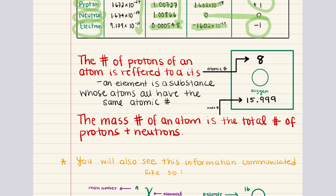Looking at an element on the periodic table — for example, here's a snapshot of oxygen — we can cover atomic number. Atomic number is often denoted as Z and it is the count of protons in the nucleus of an atom. This number is fundamental because it determines the chemical identity of the atom. Each element on the periodic table is characterized by a unique atomic number — any atom with eight protons in the nucleus is an oxygen atom.